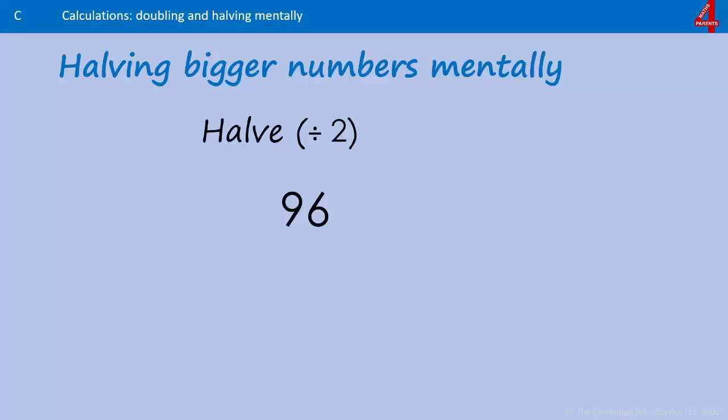Here's a nice big one for you to try: what's half of 96? Remember, you're halving 90 and 6. Half of 90 is 45, and half of 6 is 3. 45 add 3 is 48.